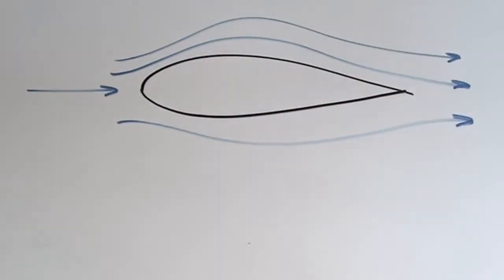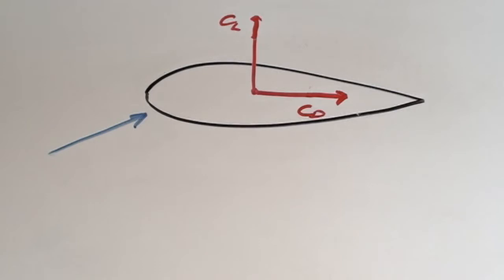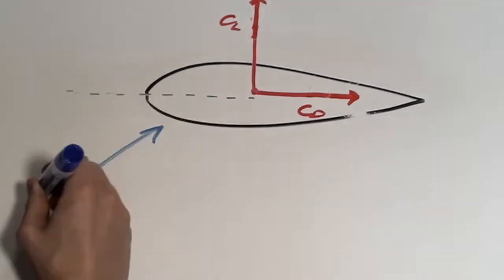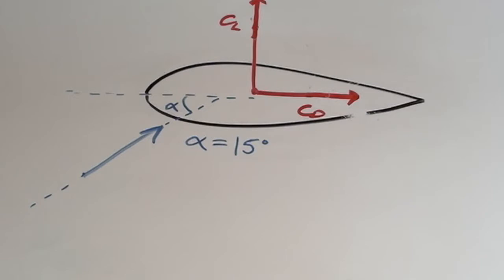Based on our understanding of the governing principles of fluid flow over an airfoil, we're able to make predictions about our expected results. We predict that the coefficient of lift will increase with respect to increasing angles of attack. Although due to stall, this relationship will only be maintained until separation begins to occur, which is typically at around 15 degrees.